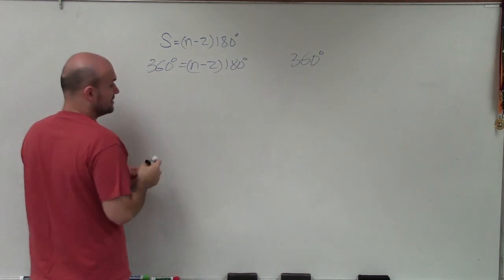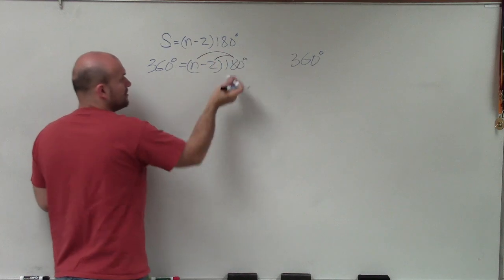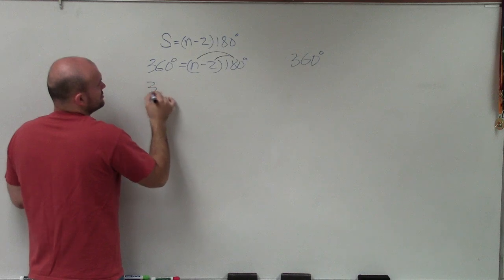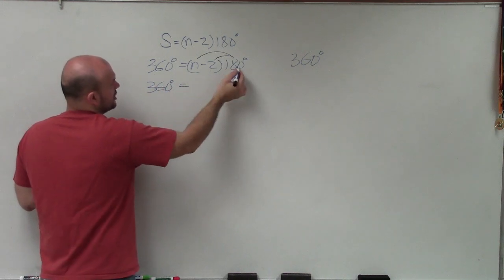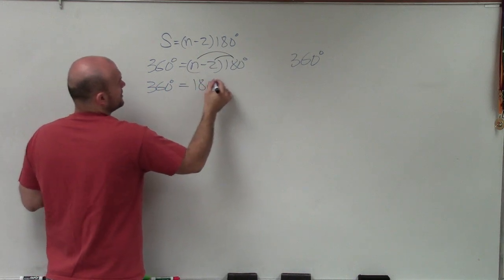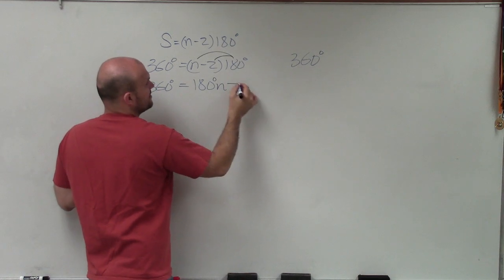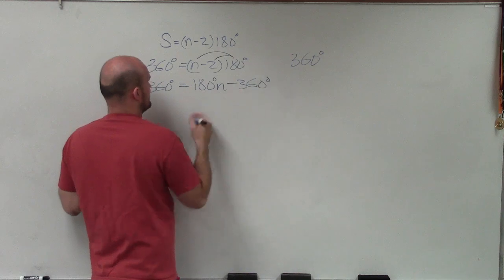Now, I don't know n, so I need to solve for n. To do that, I'm going to apply the distributive property to get the n outside of these parentheses. So I have 360 degrees equals 180 degrees times n is 180n. 180 degrees times negative 2 is negative 360 degrees.